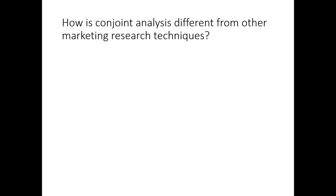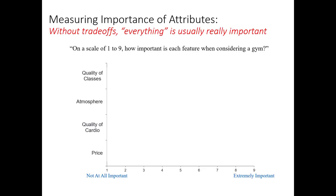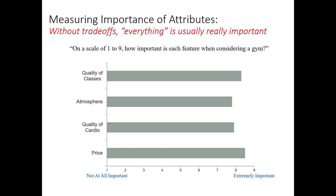Before we dive into an example of conjoint analysis, let's talk about how it's different from other marketing research techniques. Sometimes people ask: why don't we just ask people directly what attributes are most important to them when designing new products? The answer is that without asking consumers to make trade-offs between different features, they tend to say that everything is important, and the data loses meaningful insight. For instance, if we asked gym members to rate the importance of class quality, gym atmosphere, cardio machine quality, and price on a nine-point scale, we could anticipate they'd rate everything as extremely important. There's no trade-off built into the survey design, so it doesn't provide actionable insight about where to focus our limited resources to maximize people's preference or enjoyment of our gym.